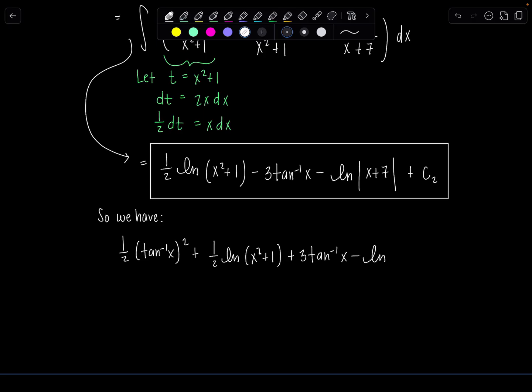Because this is the result from the second integral. So now we have at long last, always throw a little narrative in there, it makes your work so lovely. From the first integral, 1 half tan inverse of x squared plus all of this. 1 half ln x squared plus 1.